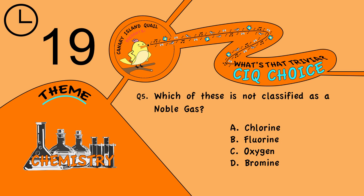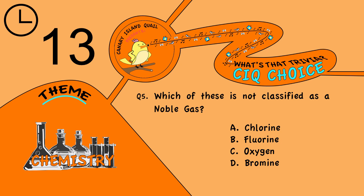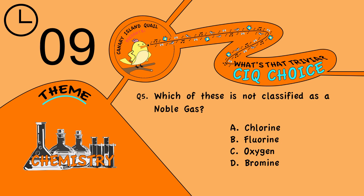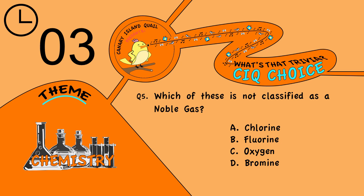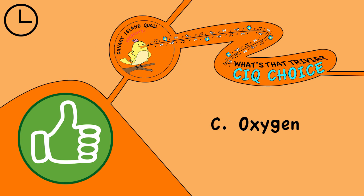Question 5. Which of these is not classified as a noble gas? Is it A, chlorine; B, fluorine; C, oxygen; or D, bromine? The answer is C, oxygen.